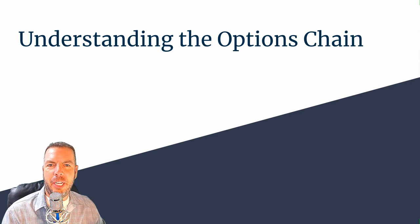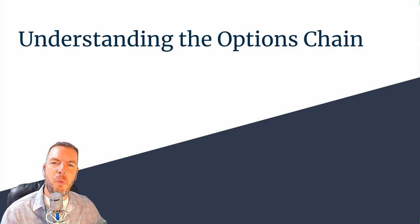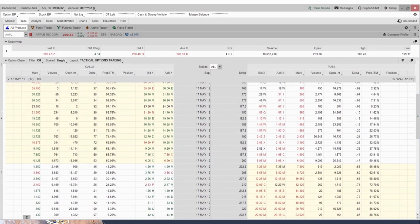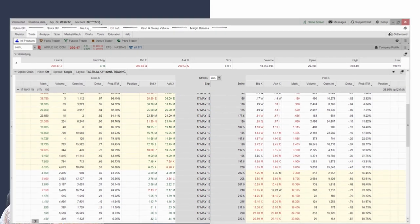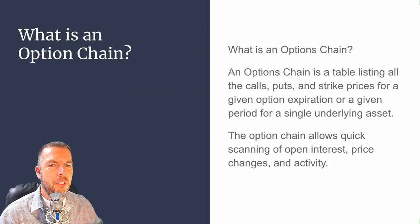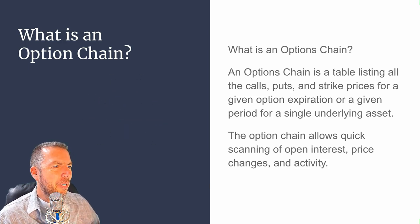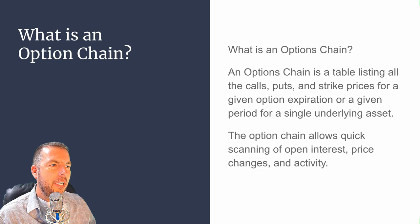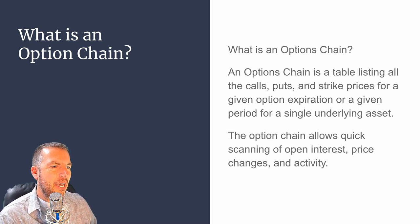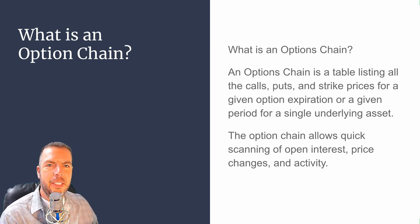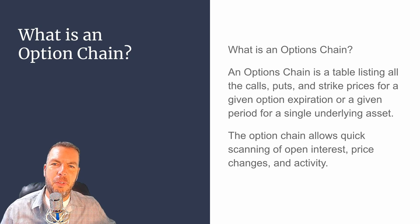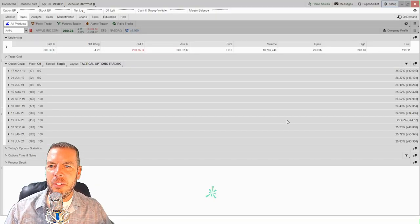We're talking about the options chain. If you've ever opened one up, there are a lot of numbers and a lot of people get overwhelmed when they first open it up. But I promise it's not that hard. So what is an options chain? Simply put, it's a table listing all the calls, puts, and strike prices for a given option expiration for a single underlying asset. The options chain allows quick scanning of open interest, price changes, and activity.